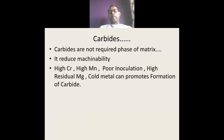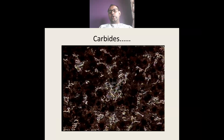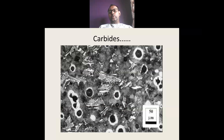Higher chromium, higher manganese, poor inoculation practice, higher residual magnesium, cold metal, and faster cooling rate can all promote formation of carbide. These are some pictures showing you the microstructure of a matrix containing carbides. This is how carbides look in the microstructure matrix of ductile iron.